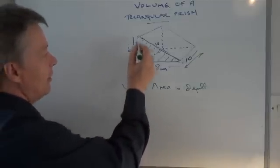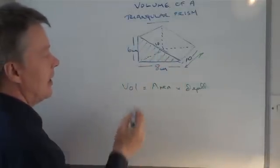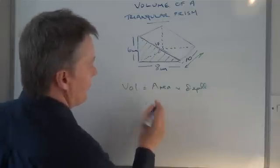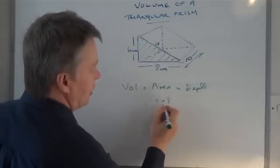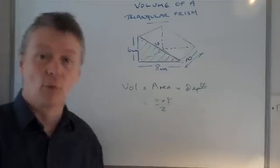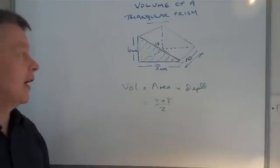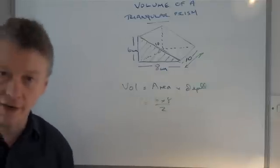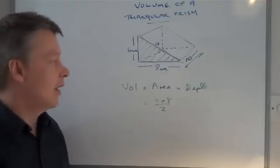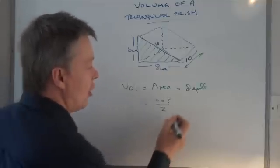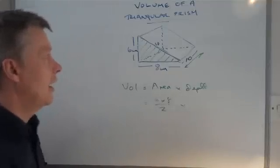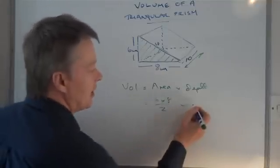So the area of this triangle is here. So 6 times 8 divided by 2. And if you look at one of the other videos, it will give you a video on how to work out the area of a triangle. And then all we're going to do is multiply it by the depth of this particular shape, which is 10.